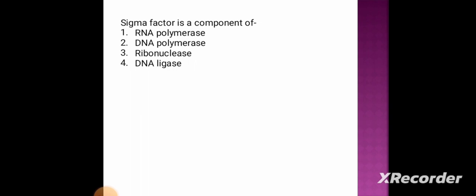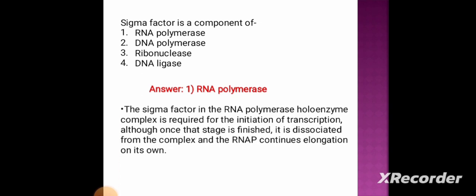Next question: the sigma factor is a component of which of the following? Option 1: RNA polymerase, option 2: DNA polymerase, option 3: ribonuclease, option 4: DNA ligase. The correct answer is option 1, RNA polymerase. The sigma factor in the RNA polymerase holoenzyme complex is required for the initiation of transcription.